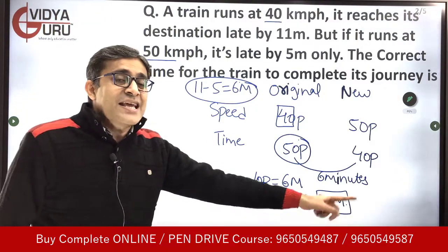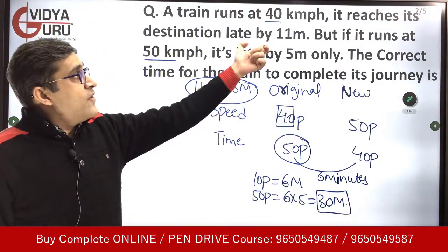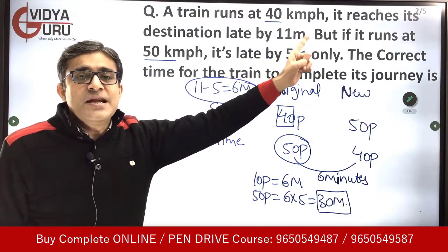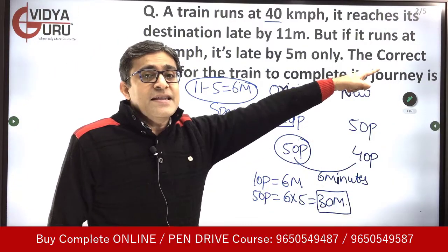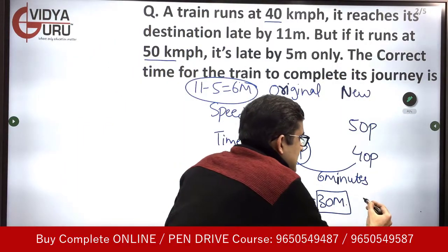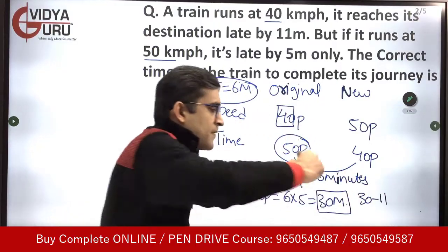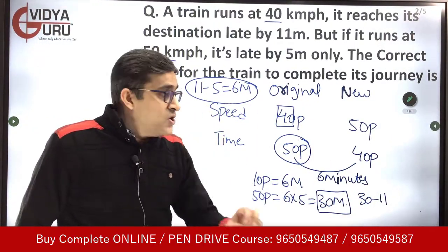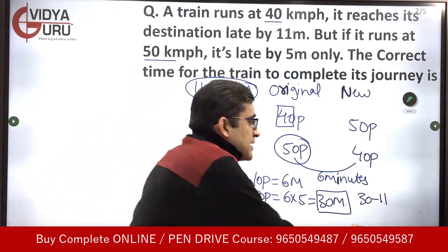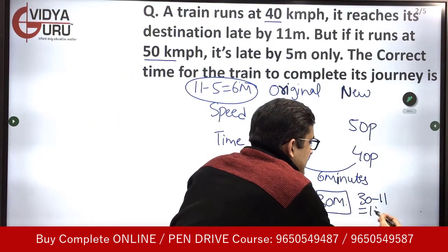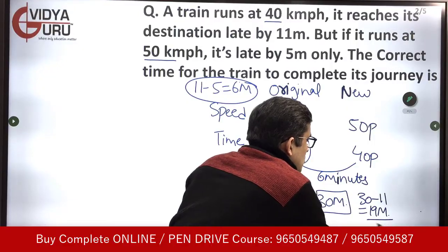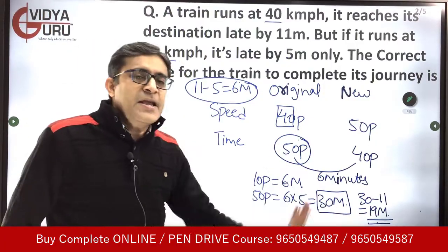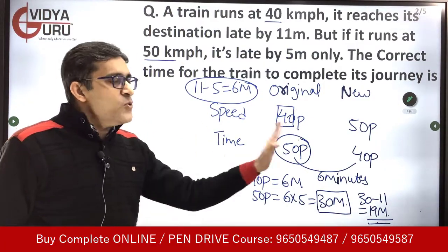So it was taking 30 minutes at that time, and when it took 30 minutes it was late by 11 minutes. So what is the correct time? The correct time is 30 minus 11, because when it takes 30 minutes it is late by 11 minutes. So the correct time when it is no longer late is 30 minus 11, that means 19 minutes. The correct time to complete the journey is 19 minutes. That's how you solve the question.